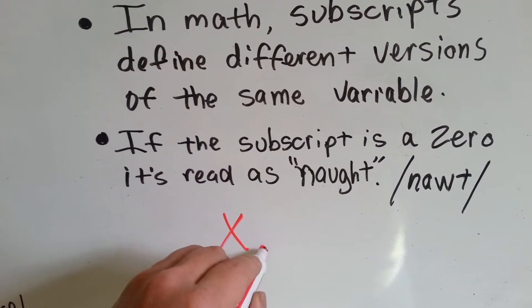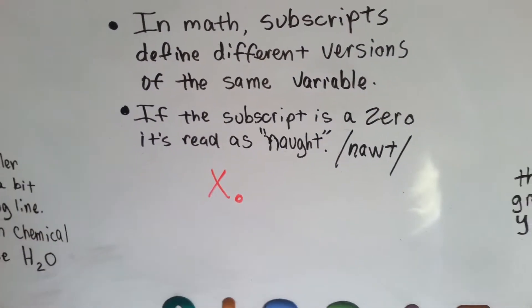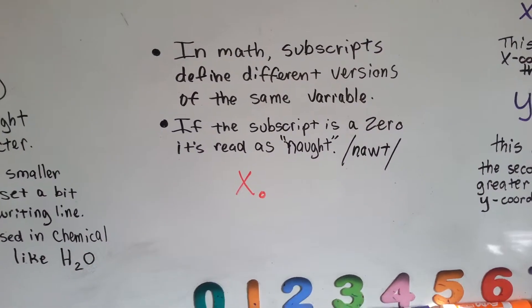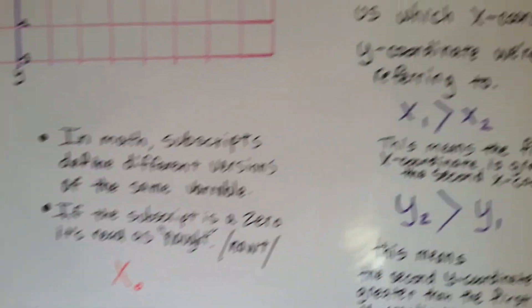So if we had x with a little o down here, it would be x not, v not, z not, whatever. The variable and then you say not. Okay.